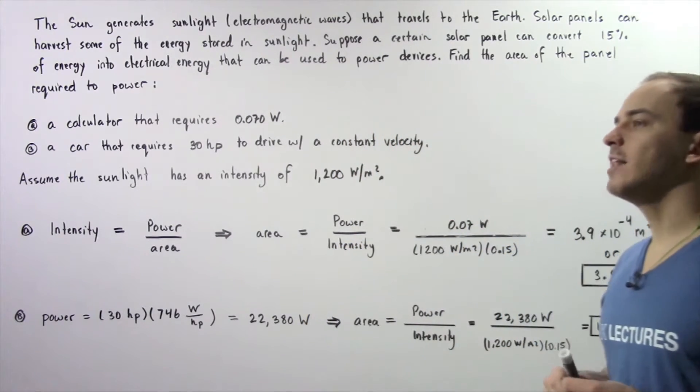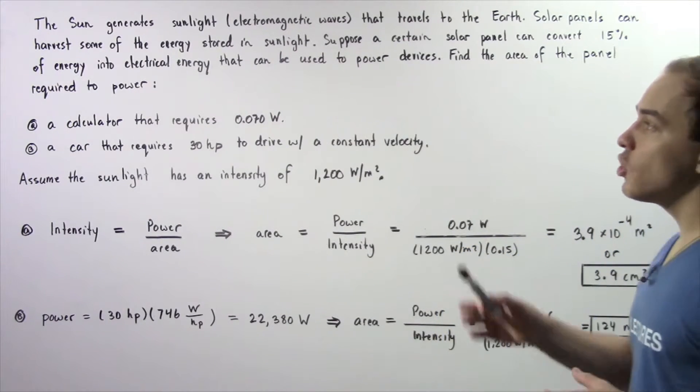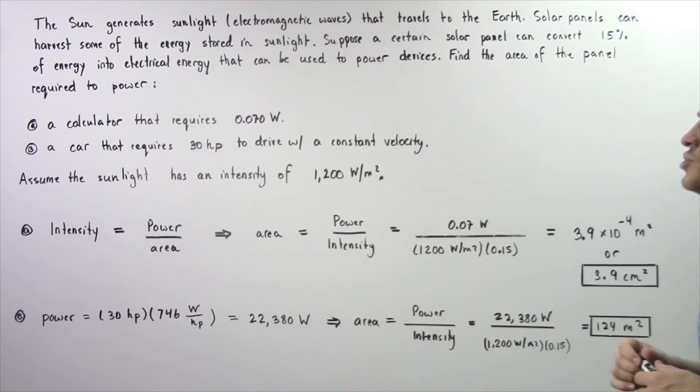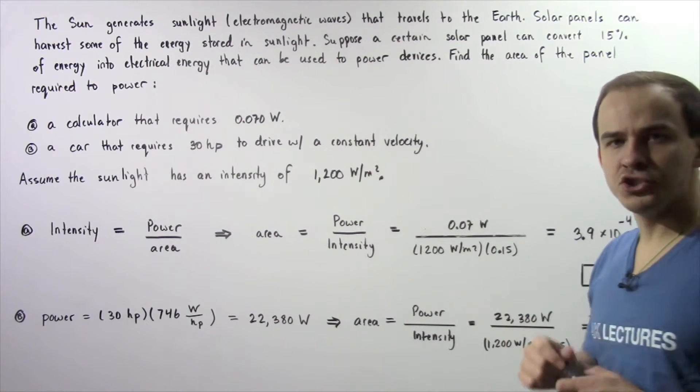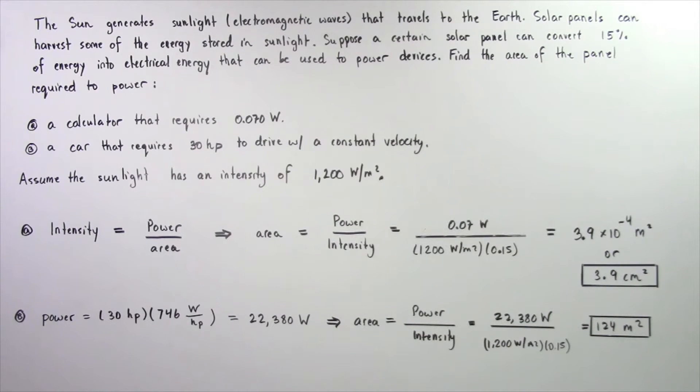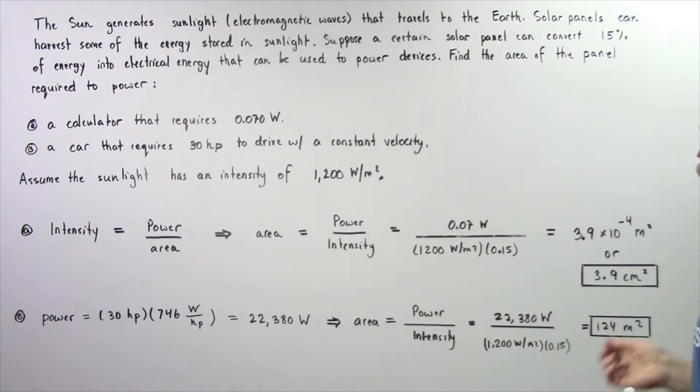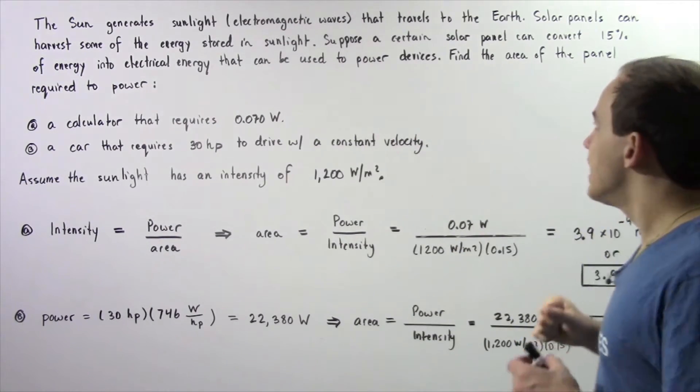Let's look at the following example that will deal with intensity of electromagnetic waves. The Sun generates sunlight, which is simply electromagnetic radiation, and this sunlight travels from the Sun to the Earth. Solar panels are devices that can harvest some of the energy stored inside sunlight. Suppose that a certain solar panel can transform 15% of the energy inside sunlight into electrical energy that can be used to power devices.